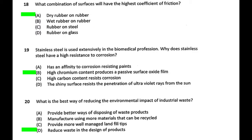Question 18: which material combination has the highest coefficient of friction? Rubber on rubber is the highest. Between dry rubber and wet rubber, dry rubber has the higher coefficient of friction because wet rubber slides more easily. The higher the coefficient of friction, the harder it is to slide, so dry rubber has the highest.